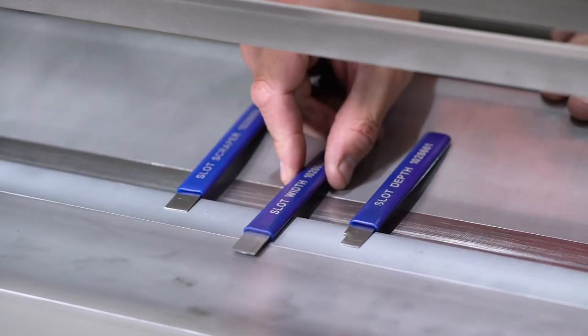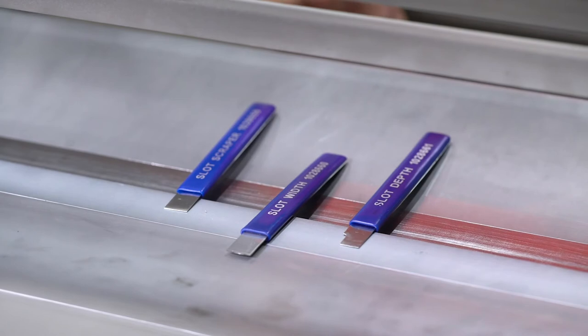You have the slot width tool. The slot width tool checks to make sure the blade guide is within tolerance in the width direction which is up and down.